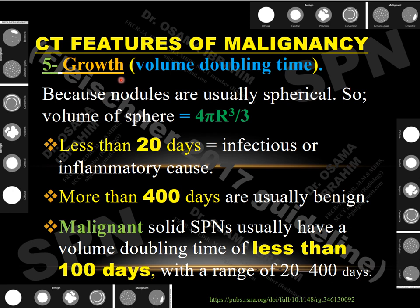The fifth feature is growth, measured by volume doubling time. Since most pulmonary nodules are roughly spherical, volume = (4/3)πR³ can calculate the nodule volume. If doubling occurs in less than 20 days, it represents infection or inflammation. If doubling time is more than 400 days, it is usually benign. Malignant solid solitary pulmonary nodules typically have a volume doubling time between 20 and 400 days, often less than 100 days.